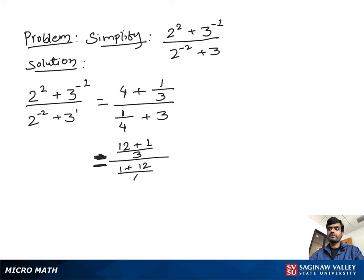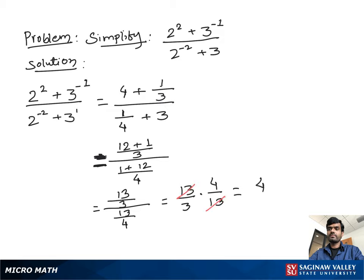Now we get 13 over 3, divided by 13 over 4. We rewrite this as 13 over 3 times 4 over 13. The 13s cancel, and our final answer is 4 over 3.